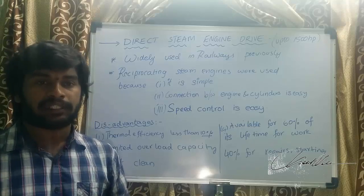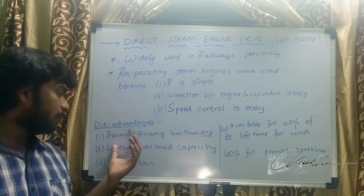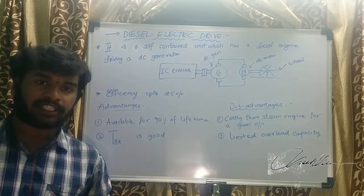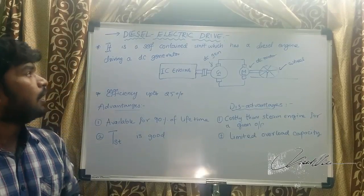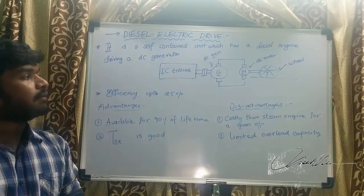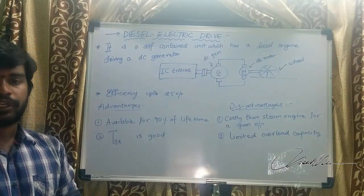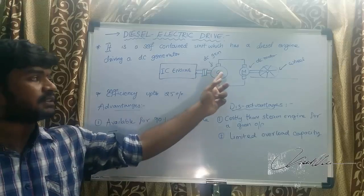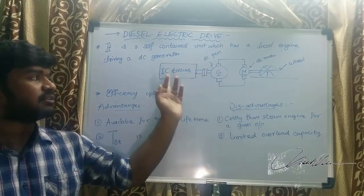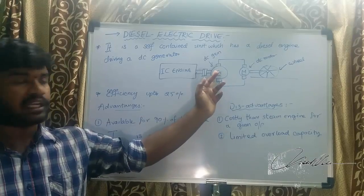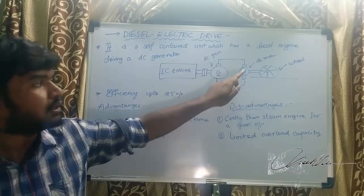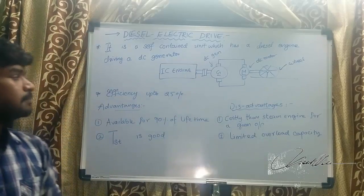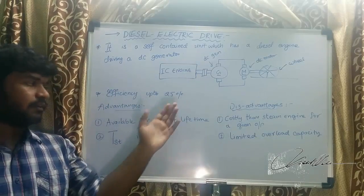When turbines were used, a condenser had to be placed on the moving vehicle, and this improved thermal efficiency up to 15 percent. The next drive is the diesel electric drive — a self-contained unit with a diesel engine driving a DC generator. The diesel engine supplies mechanical energy to the generator, which produces electrical energy supplied to a DC motor, which is coupled to the driving wheel. The efficiency of this drive is 25 percent.